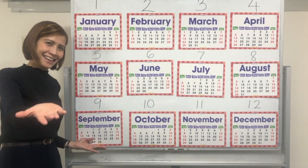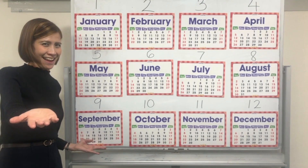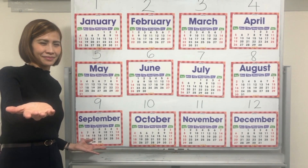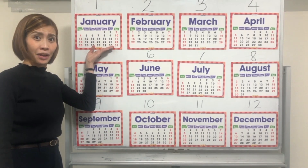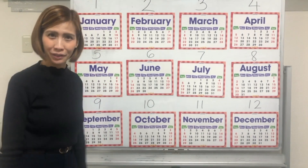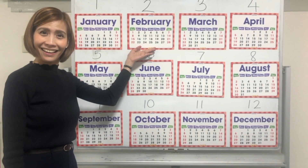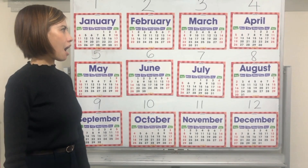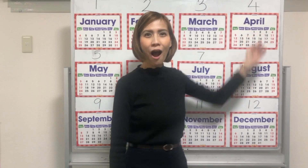When is your birthday? My birthday is in January. January. Good. What about you? February? February? February? February?